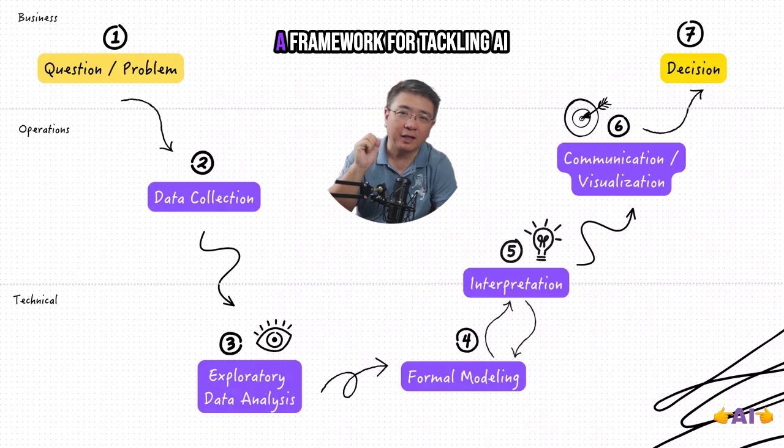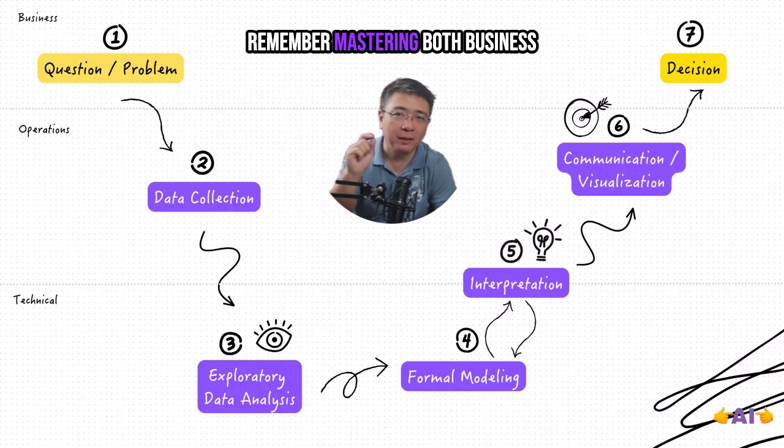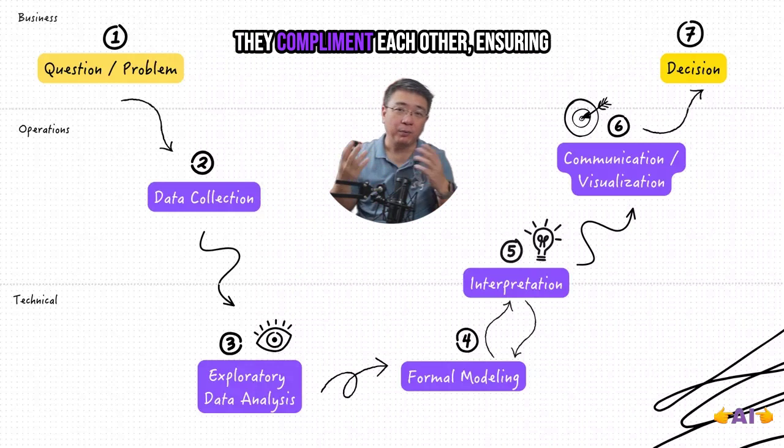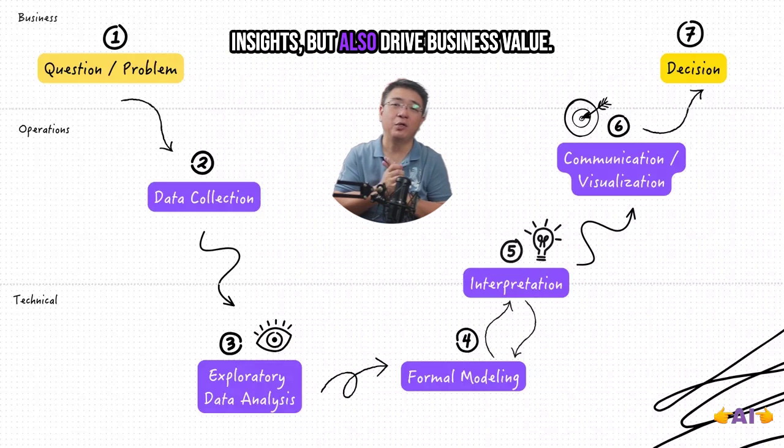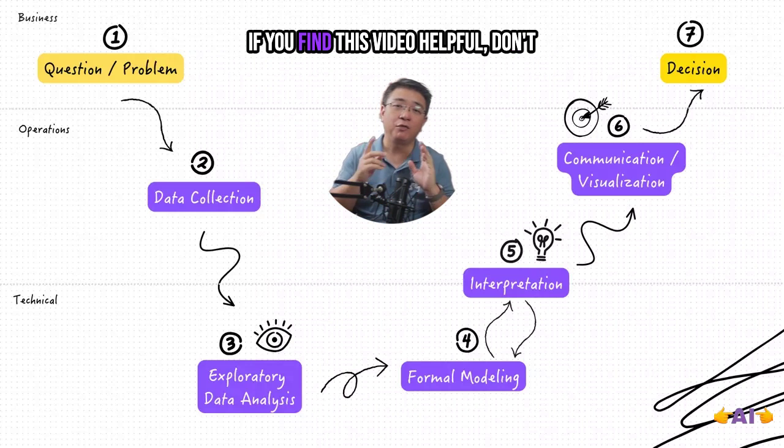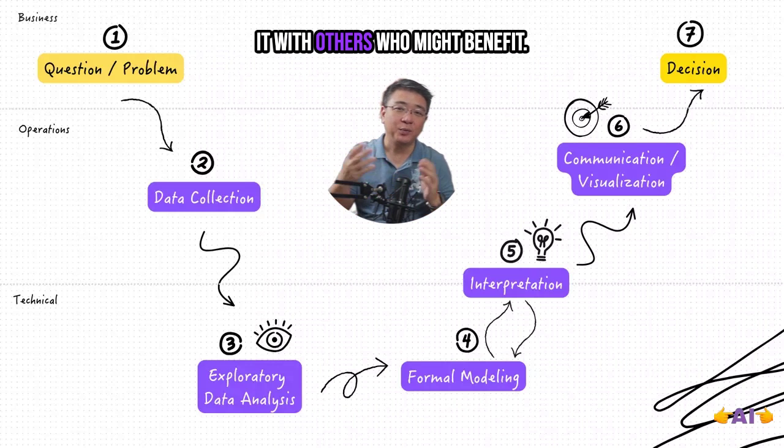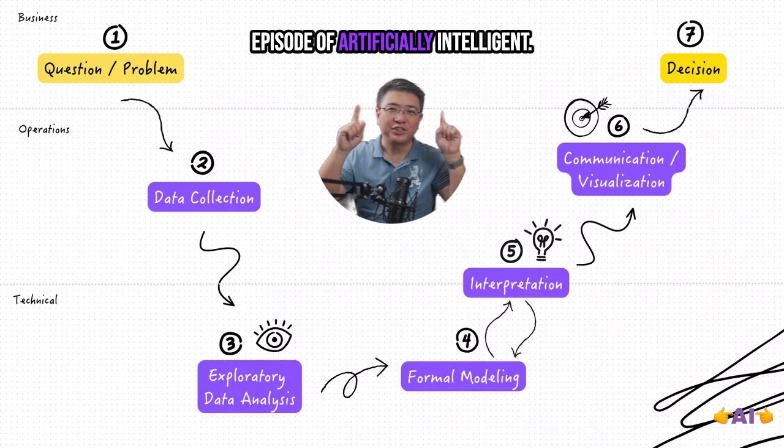And there you have it, a framework for tackling AI and data science projects. Remember, mastering both business and technical skills is key to success. They complement each other, ensuring that your project not only delivers insights but also drives business value. If you find this video helpful, don't forget to like, subscribe, and share it with others who might benefit. Thank you for watching another episode of Artificial Intelligence.